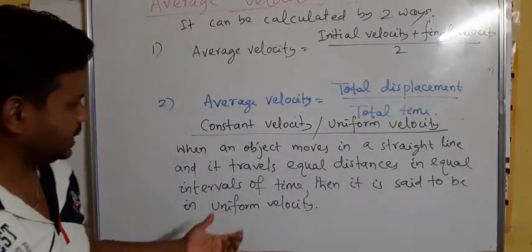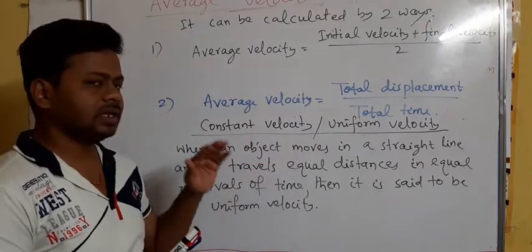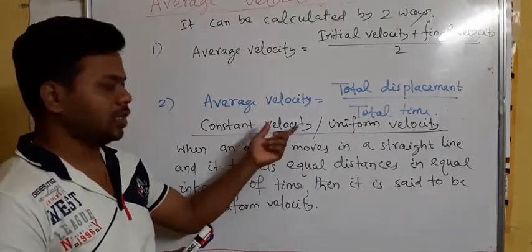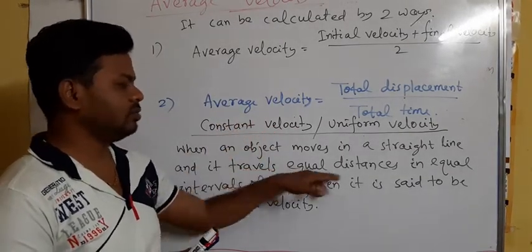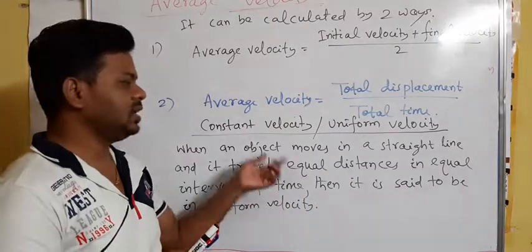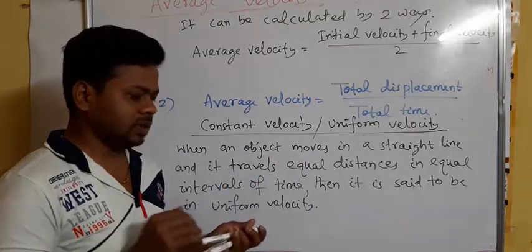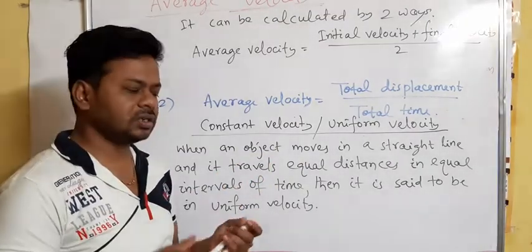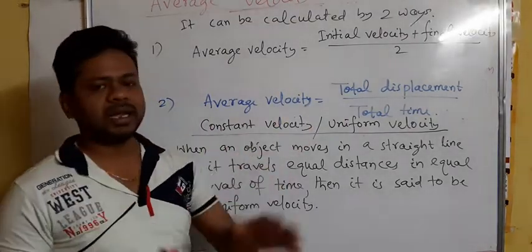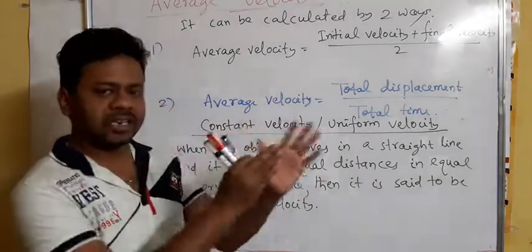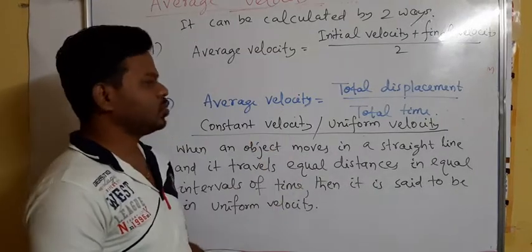One thing is added: the object should move in a straight line, because direction is important for velocity. So, to have constant velocity, the object should cover equal distances in equal intervals of time, and its direction should not change. If a moving object's direction does not change, it travels in a straight line. When an object moves in a straight line and covers equal distances in equal intervals of time, then it is said to have constant velocity.